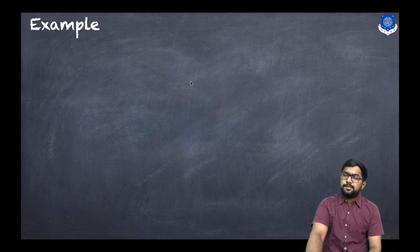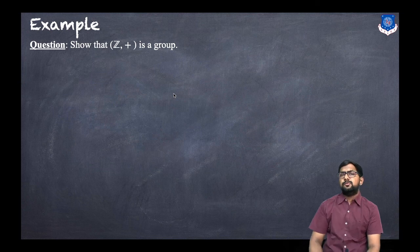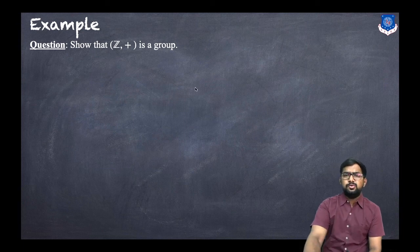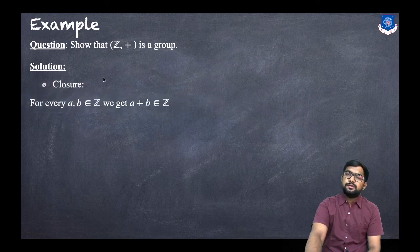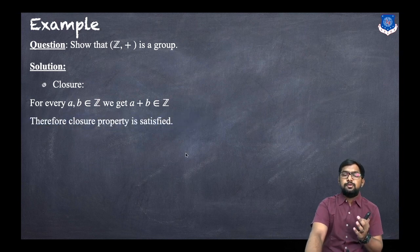Now for example, let us show that Z+ is a group. We know the conditions for a group: closure property, associative property, existence of identity, and existence of inverse. For the closure property: Z means the set of integers, and for every A, B belonging to Z, we get their addition also belonging to Z. So therefore the closure property is satisfied.